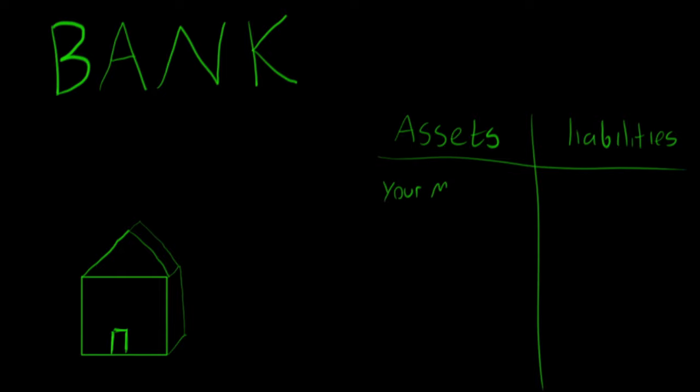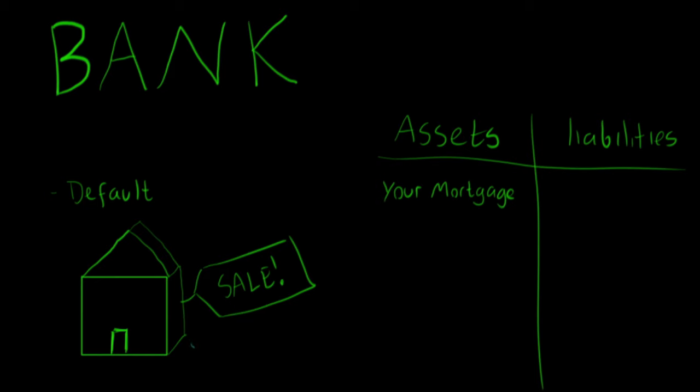Sometimes the borrower, for whatever reason, defaults on their mortgage by missing too many payments. The bank has to take the house away and sell it to somebody else to pay back some or all of the amount owing on the mortgage. If the bank sells the house and the proceeds